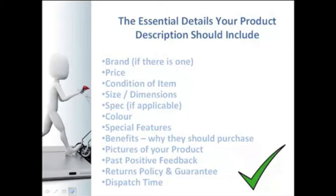Once you start building up positive feedback about your products, include a selection of those comments within the main body of your listing description. People like to read that others have been satisfied with the product and your service. As a potential buyer reads down your description, they'll be able to see that five or six other people have bought this product and been really happy, and that the seller dispatches fast — all visible within the listing rather than requiring them to click away to your feedback, because if someone clicks away they may not come back.